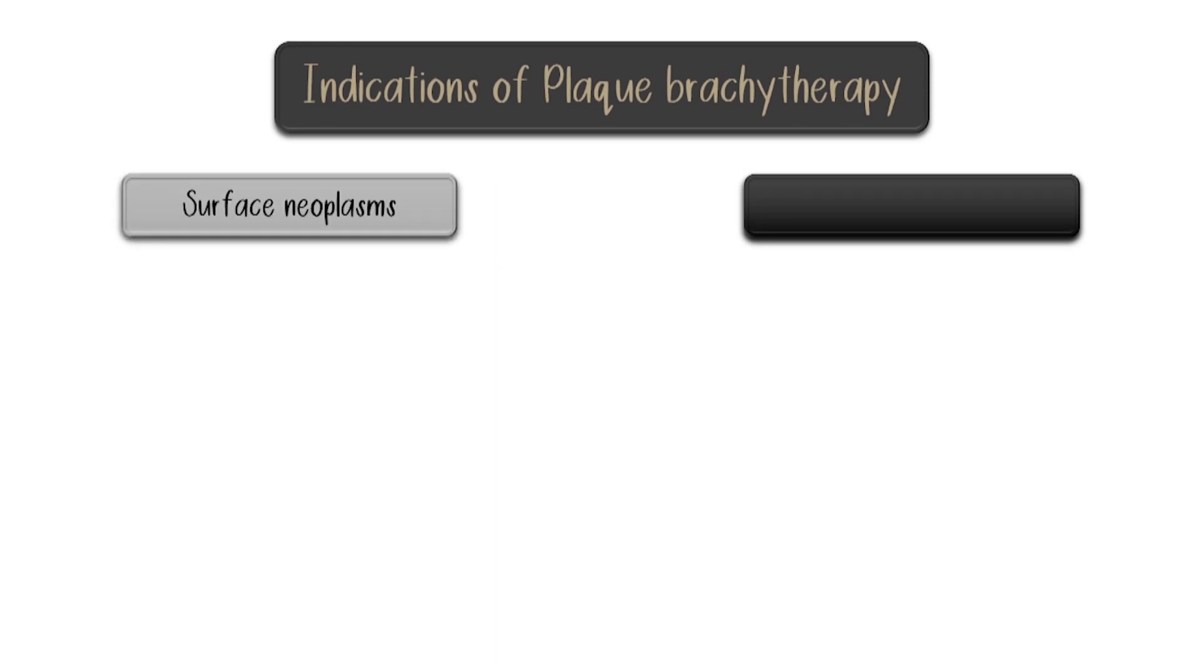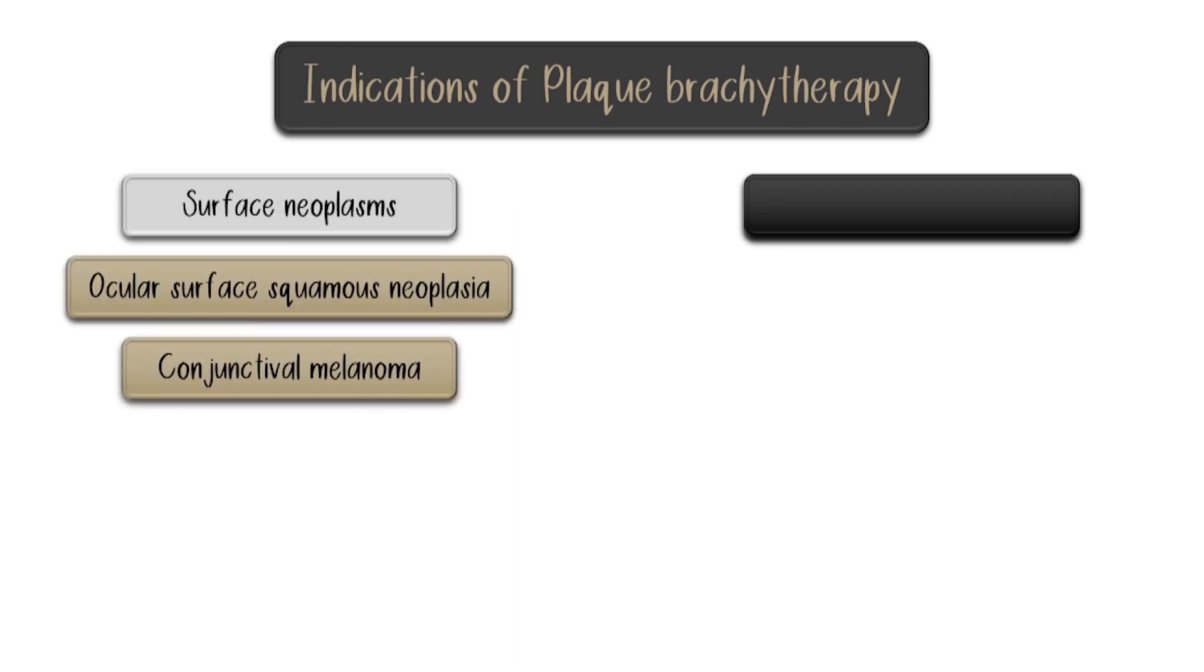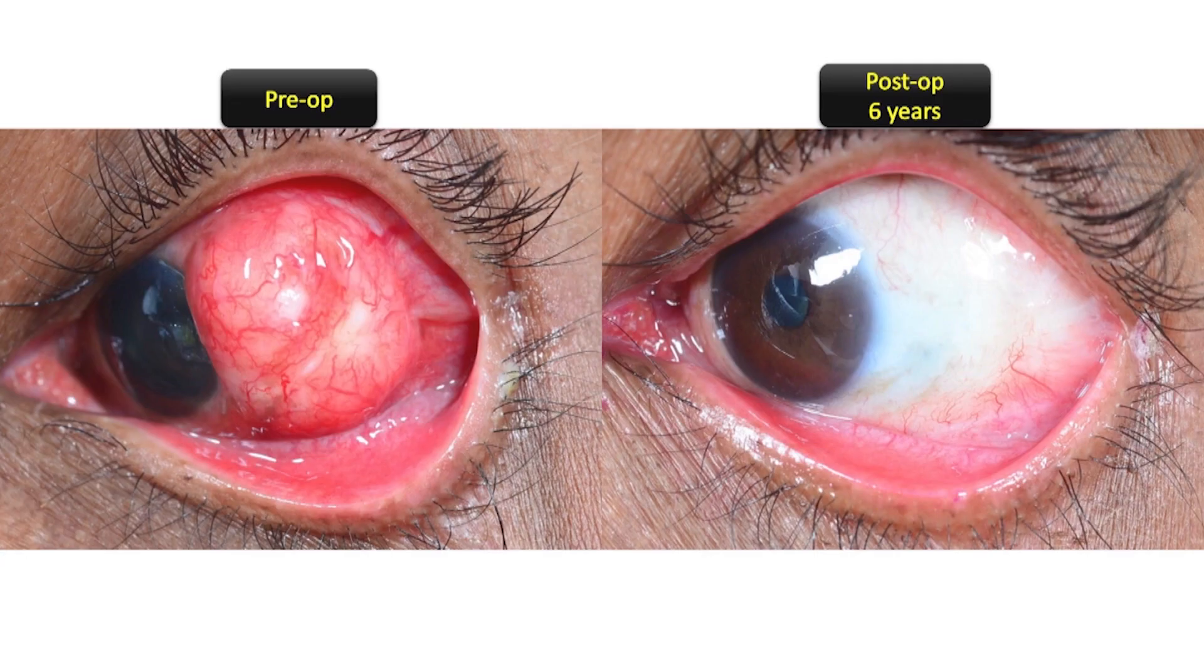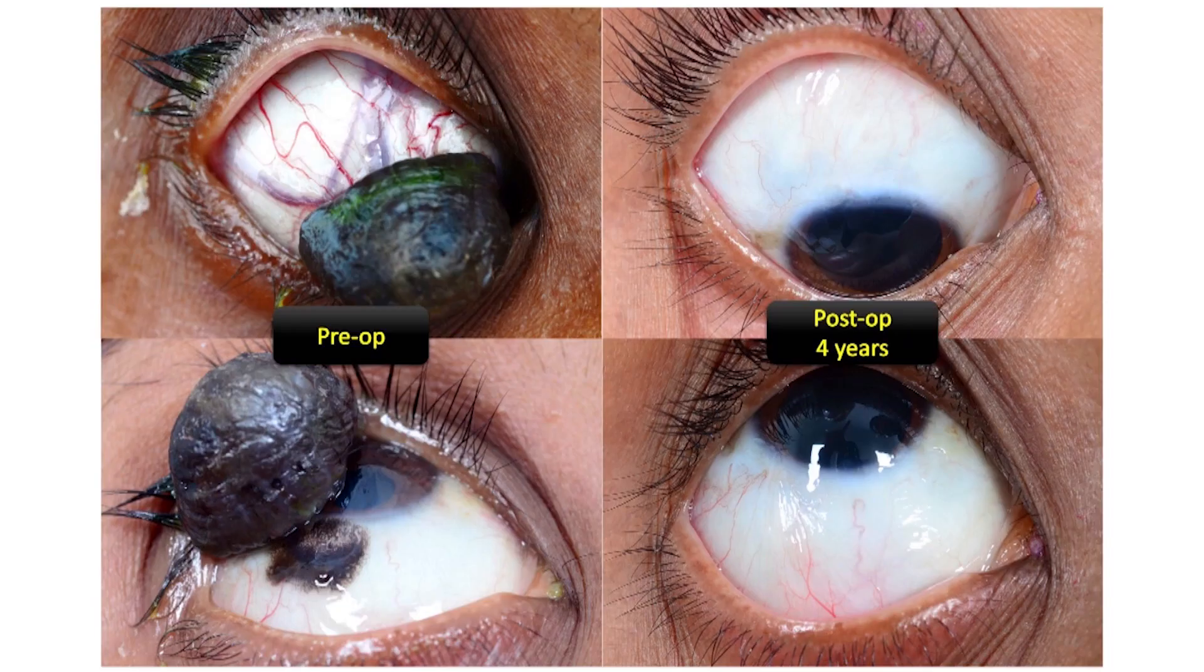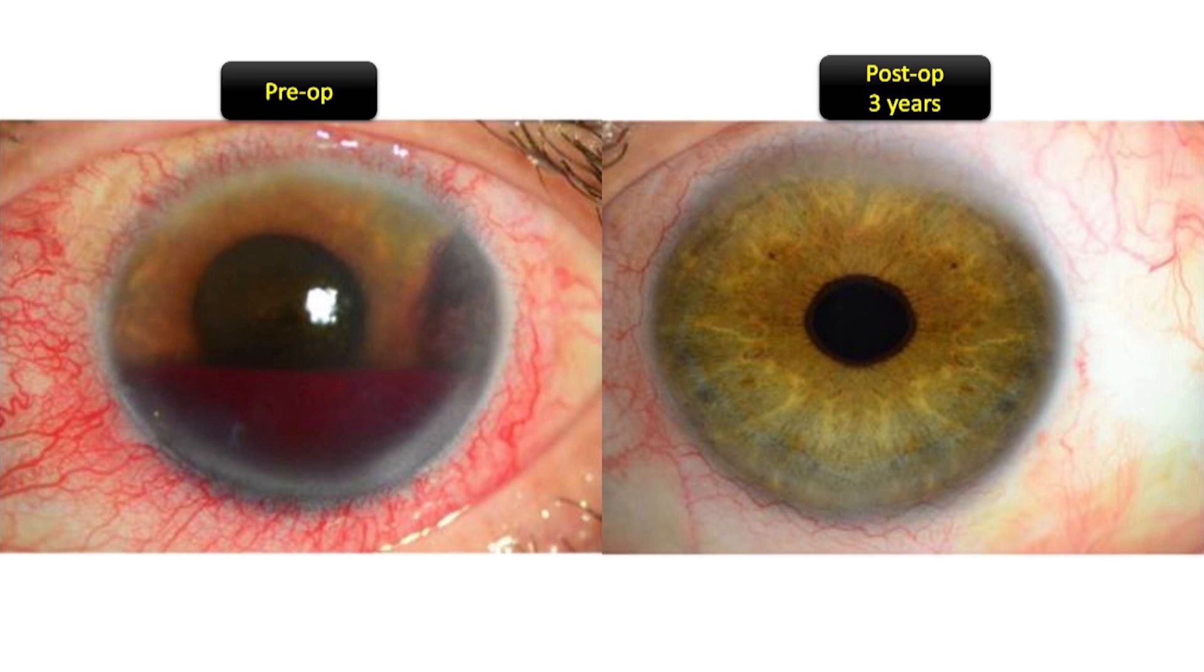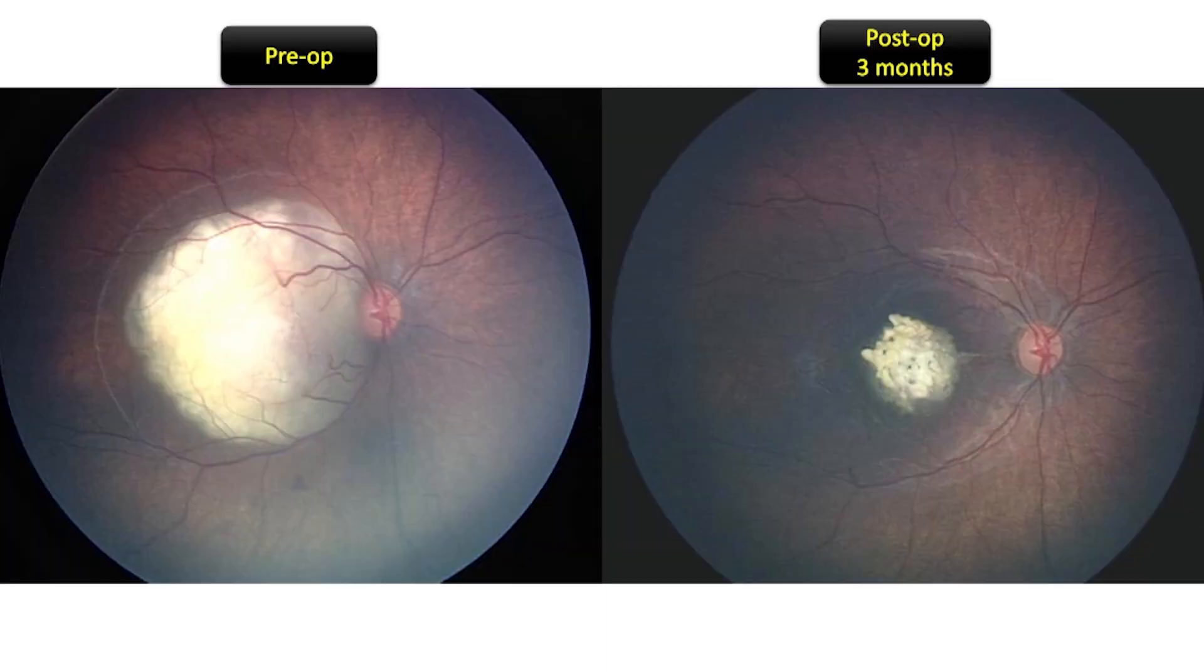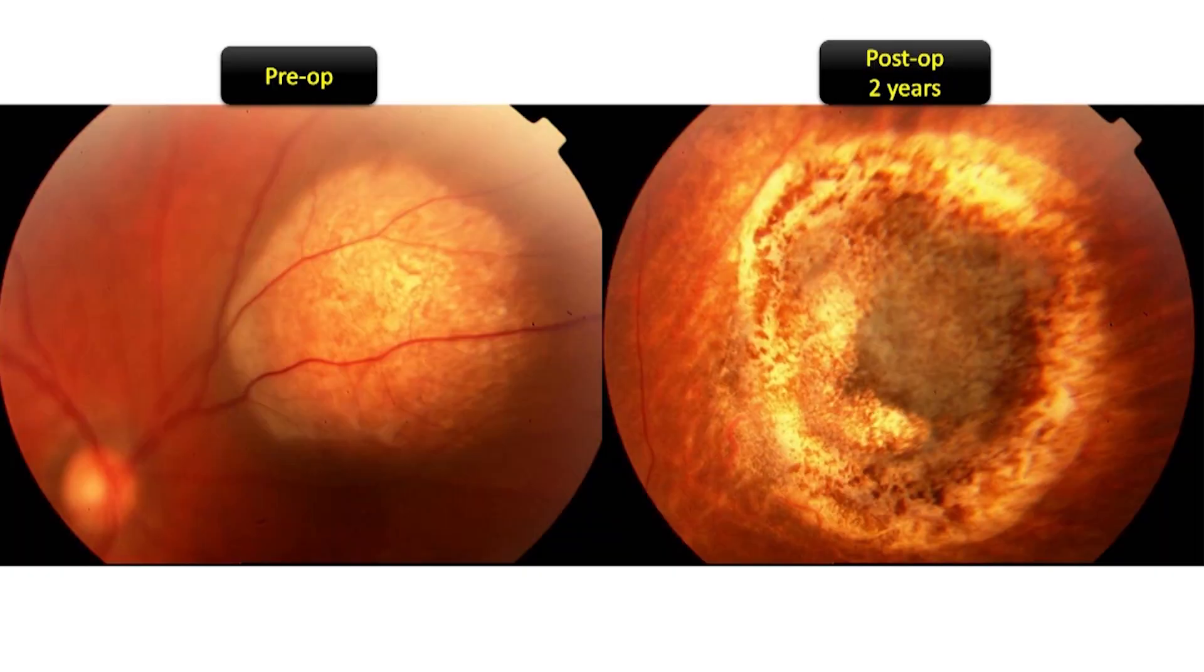Plaque brachytherapy has been successfully utilized for the treatment of various ocular tumors, including surface neoplasms like ocular surface squamous neoplasia, conjunctival melanoma, and intraocular tumors like uveal melanoma, retinal and choroidal hemangioma, retinoblastoma, ocular metastasis, and even vasoproliferative retinal tumors.